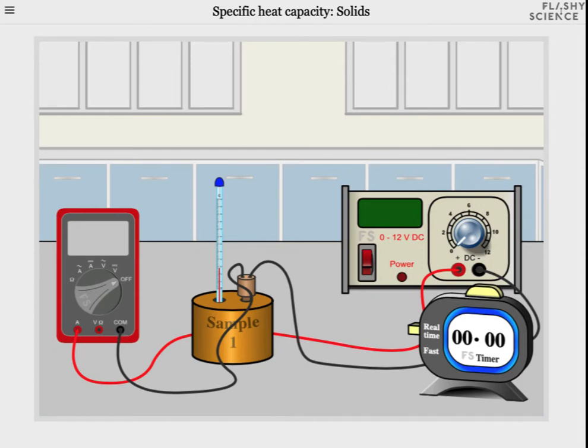Welcome to the video guide of the flashy science specific heat capacity of solids experiment. On the right hand side of the screen you'll see a power supply and a timer. Towards the centre of the screen is a sample and inserted into this is a heater and a thermometer.